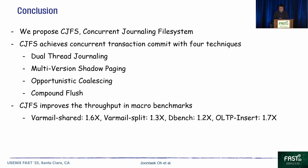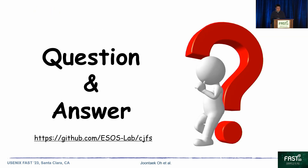This is the conclusion of my presentation. We propose CJFS, the concurrent journaling file system. CJFS achieves concurrent transaction commit with four techniques: dual-thread journaling, multi-version shadow paging, opportunistic coalescing, and compound flush. CJFS improves throughput 1.6 times in BarMailShared, 1.3 times in BarMailSplit, 1.2 times in DBench, and 1.7 times in OLTPInsert compared to original EXT4. Our source code is uploaded on GitHub. Thank you for listening.